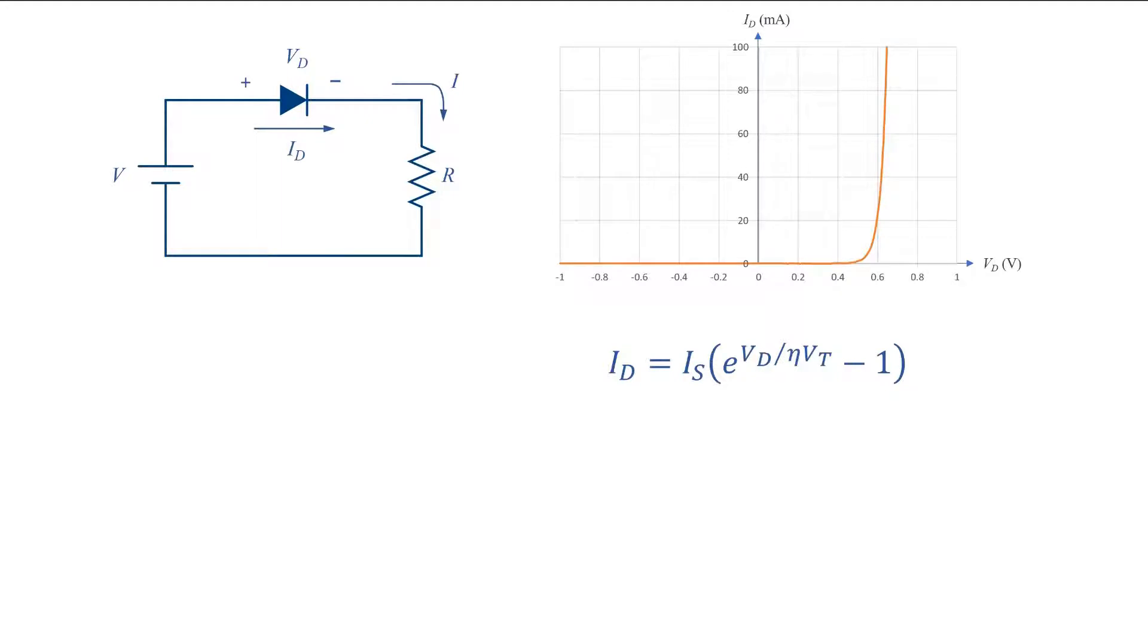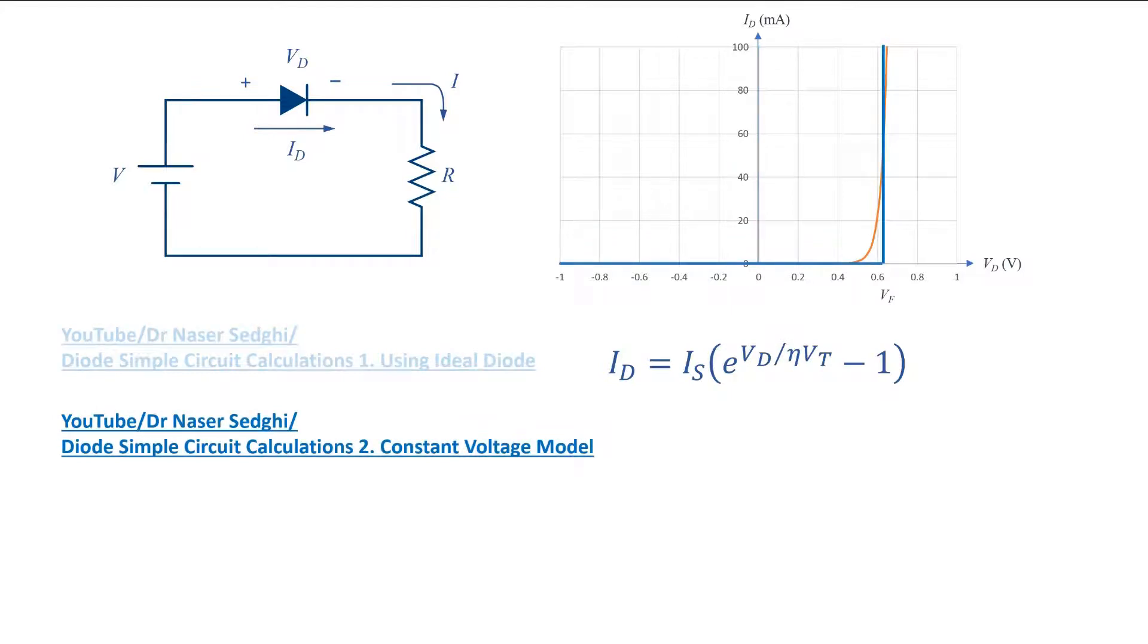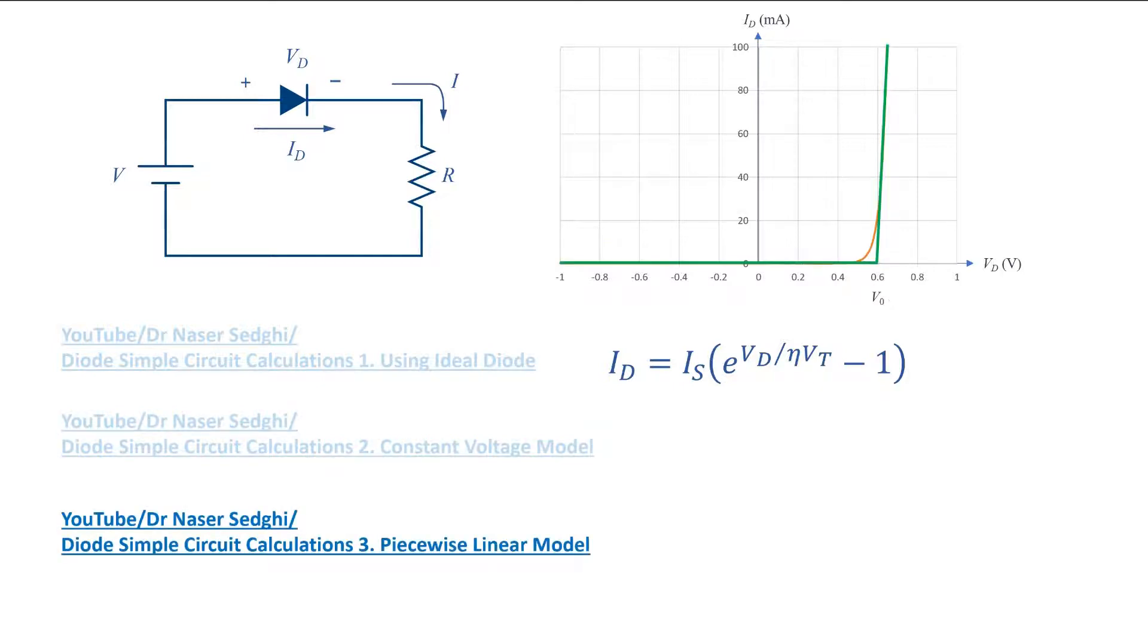The current has an exponential relationship with the voltage which is a nonlinear function. In previous videos I have shown how to calculate the current assuming an ideal diode using the constant voltage model or using the piecewise linear model. In all of these methods we use some approximations. Here I will show how to calculate the exact current without any approximation.